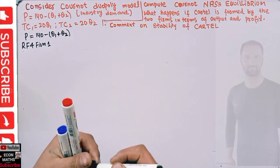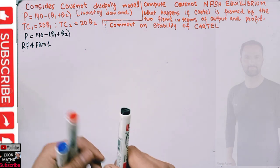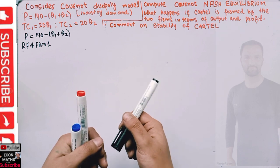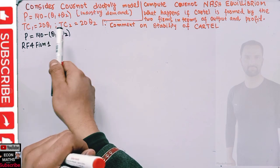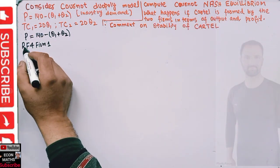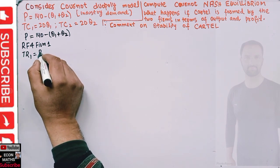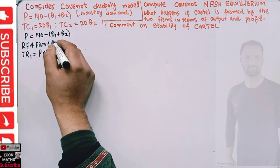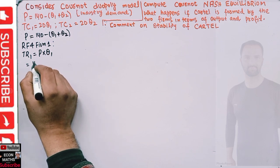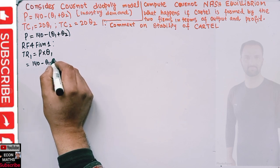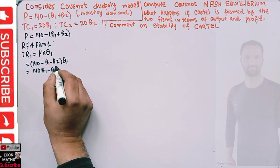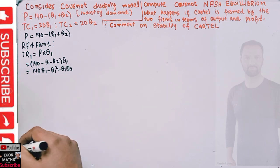The reaction function is simply the optimal quantity firm 1 should produce given firm 2 produces q2 — it is the best response for firm 1 in terms of output level given the output level decided by firm 2. For firm 1, total revenue equals price times q1, which is (140 minus q1 minus q2) times q1, giving us 140q1 minus q1 squared minus q1·q2.